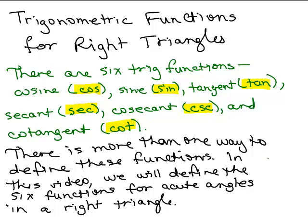As it turns out, there's more than one way to define these functions. In this video, we're going to define these six functions for acute angles in a right triangle. Remember, an acute angle is an angle between zero degrees and 90 degrees.